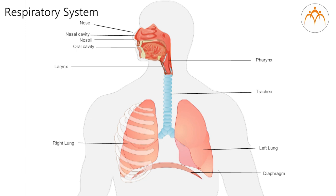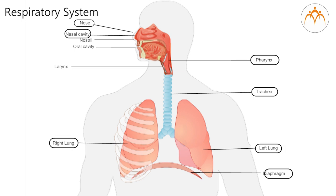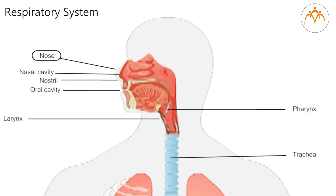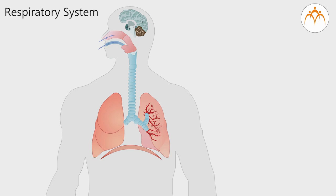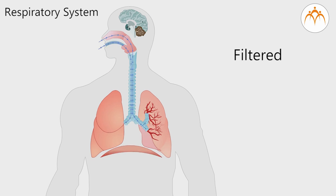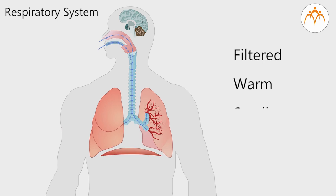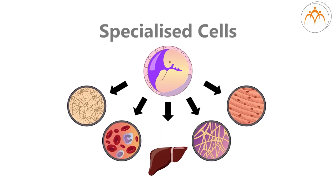Now let us study the respiratory system of man. Respiratory system consists of organs like nose, nasal cavity, pharynx, windpipe or trachea, lungs and diaphragm. The respiratory system begins with the nose. We breathe through nostrils. Air that we take in is filtered and becomes warm inside the nose.